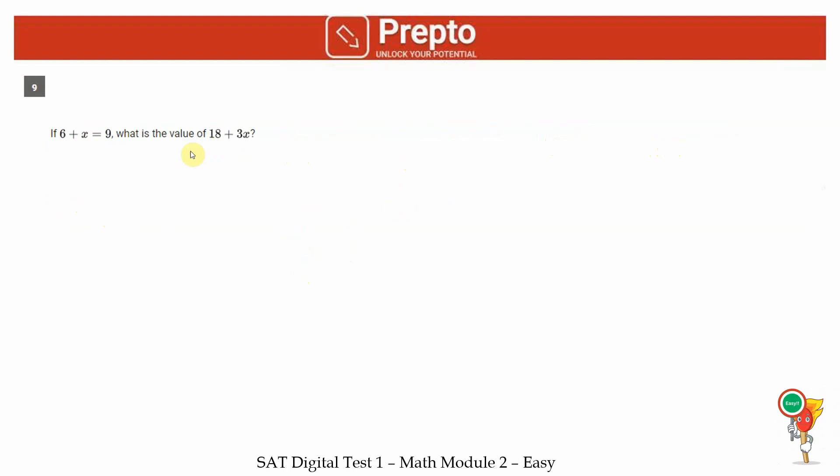Ninth question. If 6 plus x is 9, what is this value? Usually there's always a connection with at least one of the sides. Here your left hand side and 18 plus 3x, they are connected. This multiplied by 3 gives us 18 plus 3x. If I take 6 plus x, multiply it with 3, I get 18 plus 3x. Hence, I need to similarly multiply the right hand side by 3 to get 27. So our answer is 27.